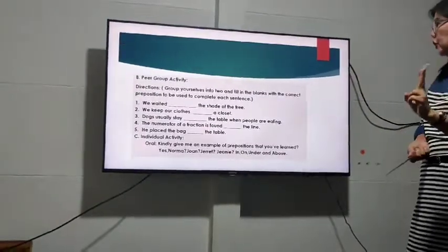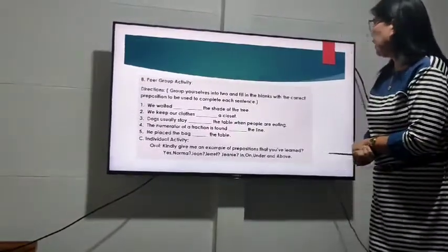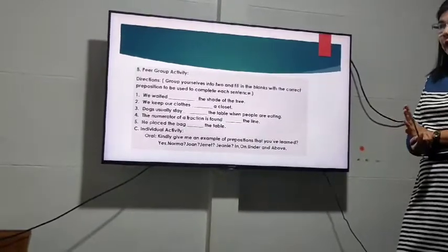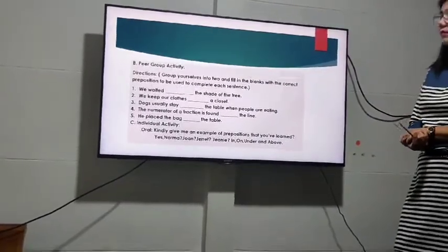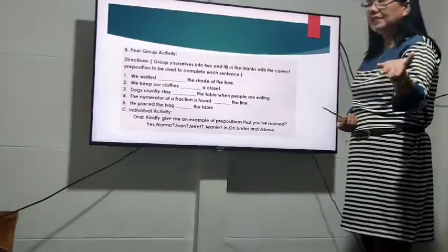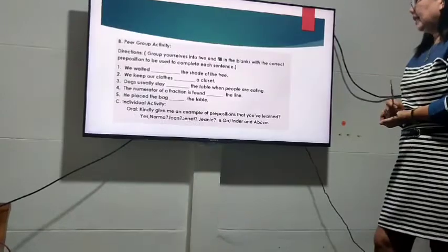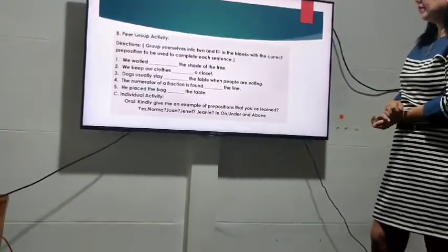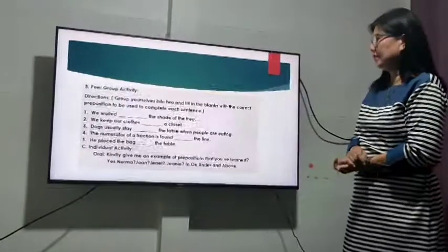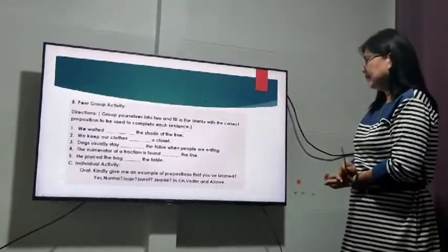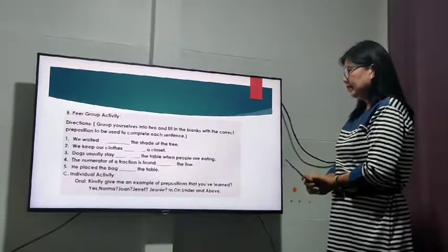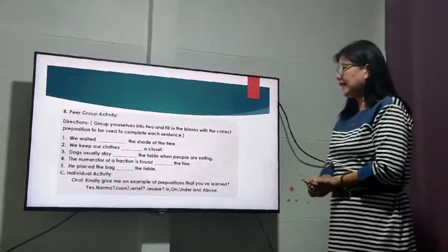Okay, let's now have our peer group. Group yourselves into two, then answer the blanks with the correct prepositions to be used to complete each sentence. I will give you five minutes to answer. Number one: we waited under the shade of the tree. Okay very good. Let's now group two: we keep our clothes in a closet. Okay another group: dogs usually stay under the table when people are eating. Okay another group: the numerator of a fraction is found above the line. Okay last group: he placed the bag on the table. Very good.